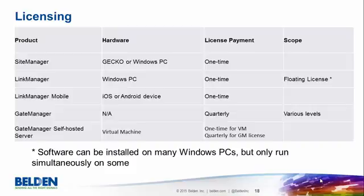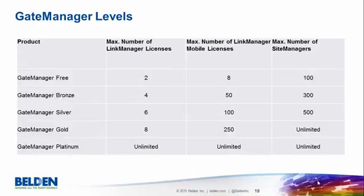The link manager mobile license is also a one-time payment. Unlike the other licenses, the gate manager license incurs a recurring quarterly fee. There are various levels of gate manager ranging from free of charge to platinum level, determined by the maximum number of link manager licenses available. One or two link manager licenses is free of charge; three or four moves into the bronze category with a quarterly fee; five or six moves to silver, continuing up to an unlimited number at the platinum level, with each category carrying a higher quarterly fee.